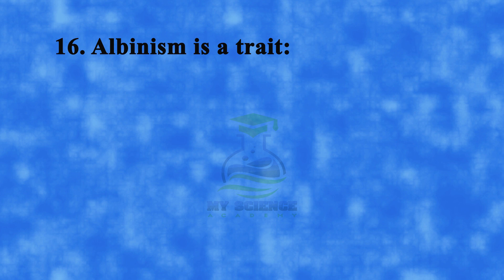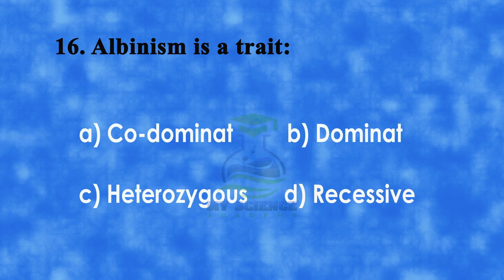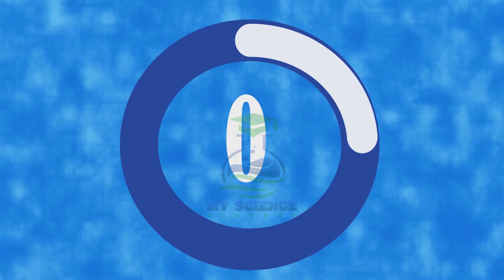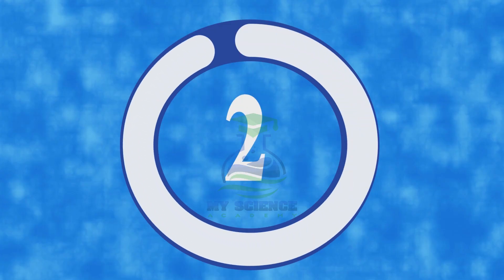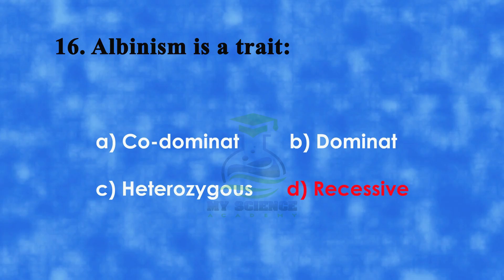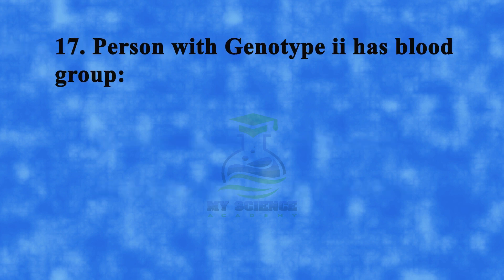Question 16: Albinism is a — A. Co-dominant, B. Dominant, C. Heterozygous, or D. Recessive trait. Correct answer is D. Recessive.